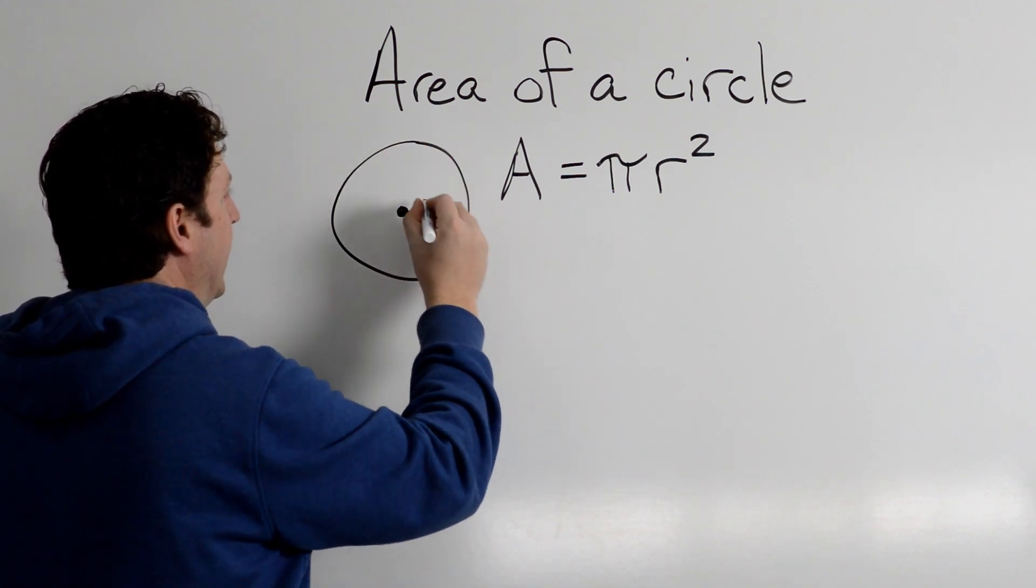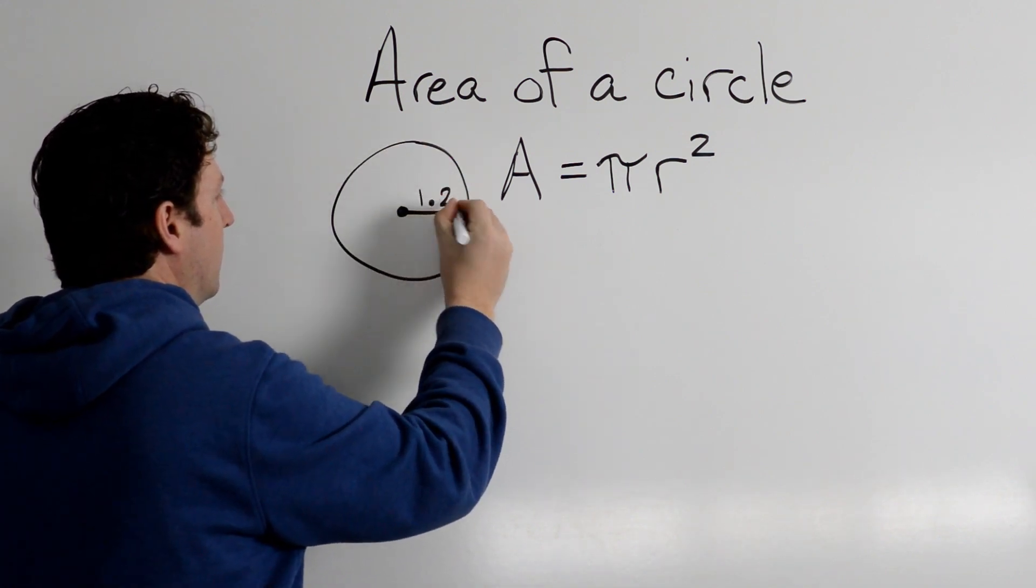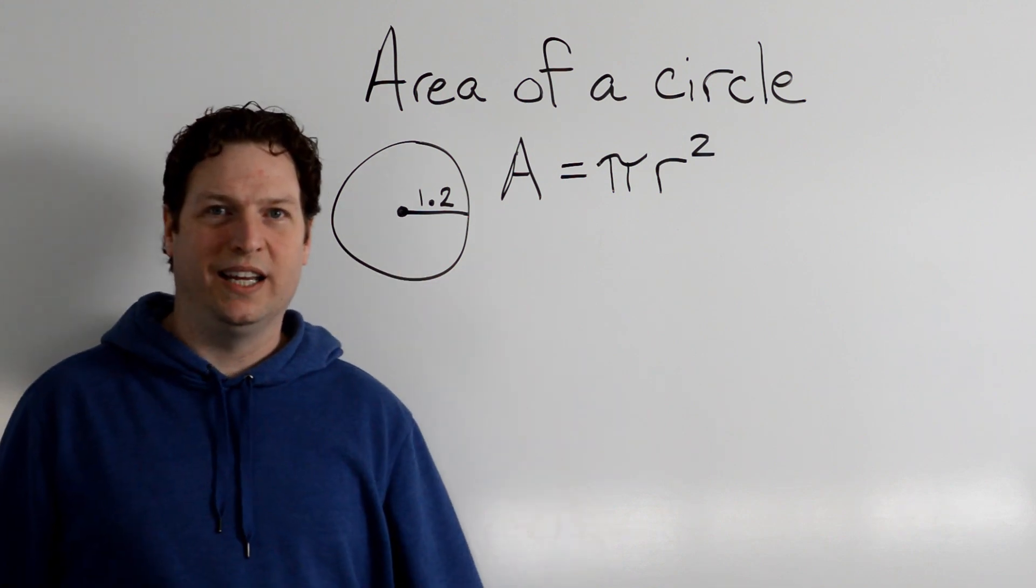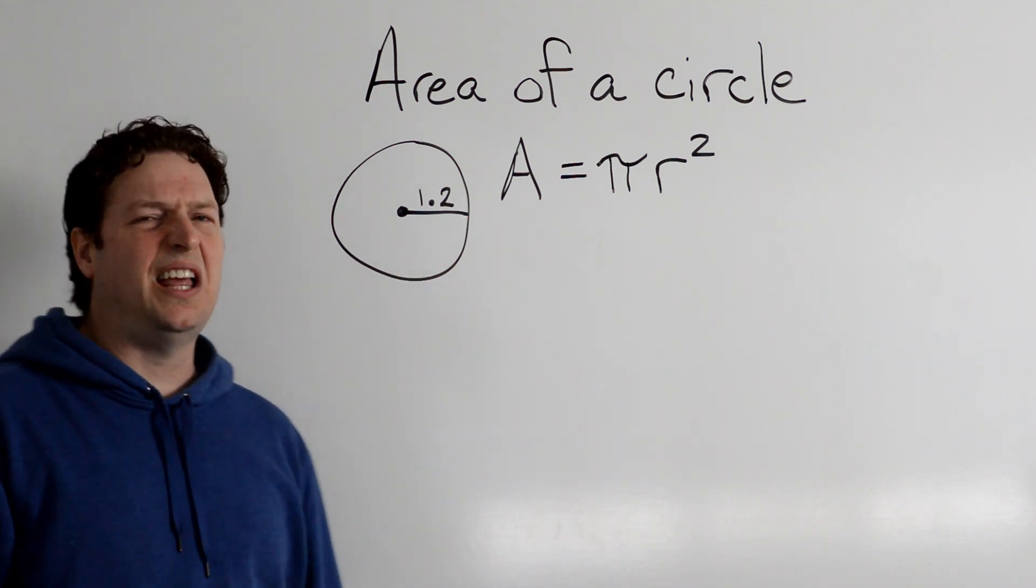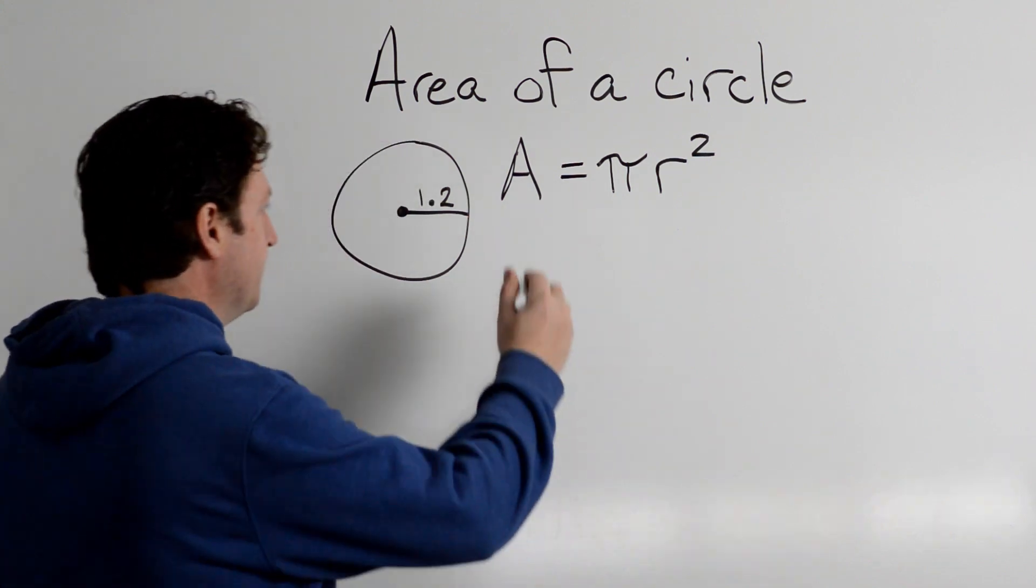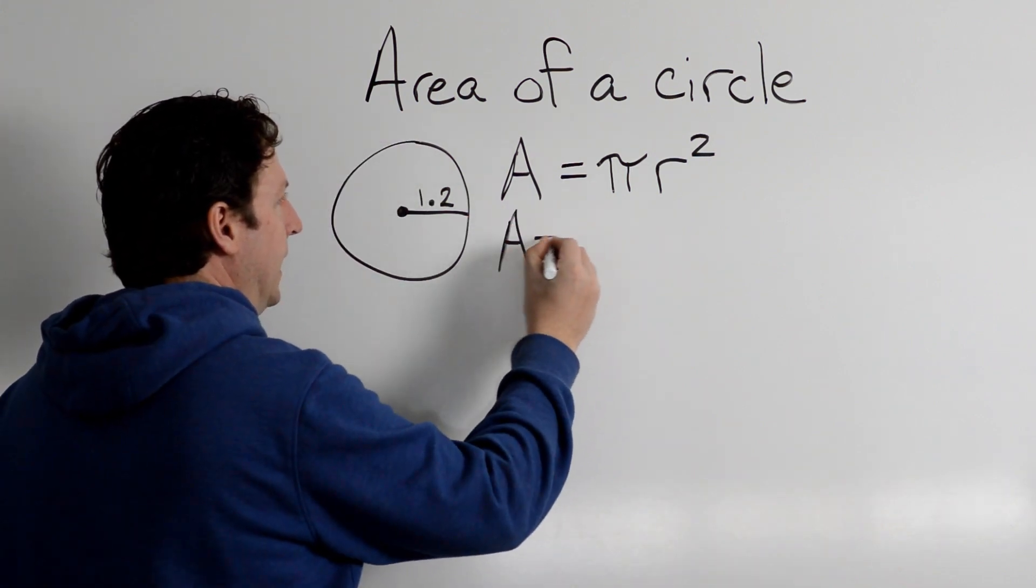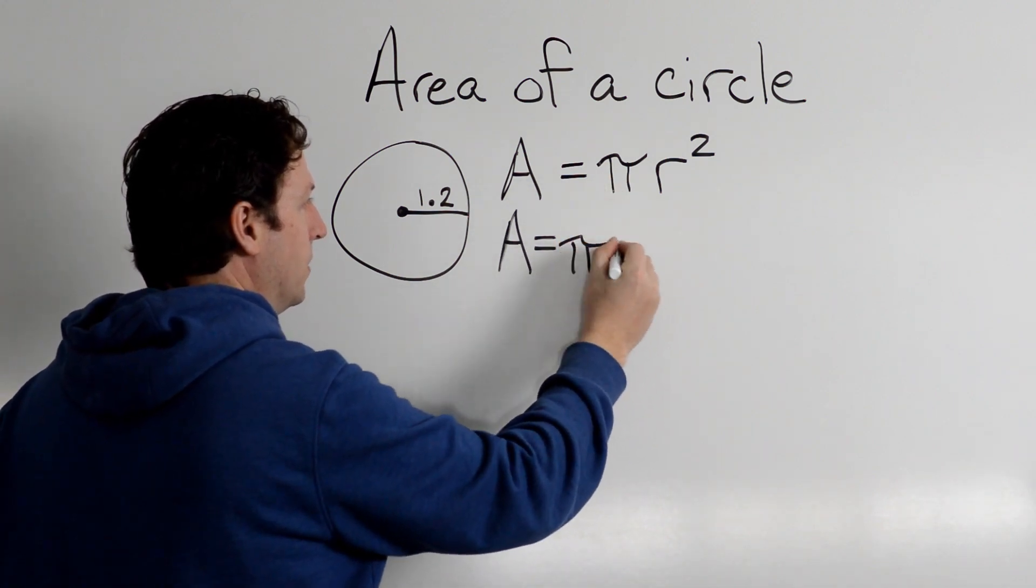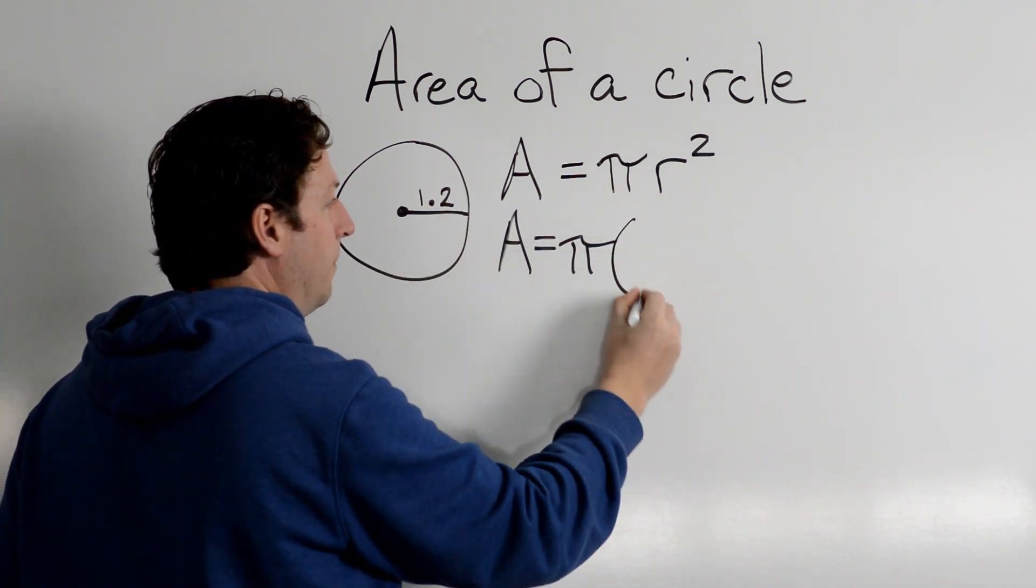So what if you have a radius of 1.2? I hate decimals. A equals, I'm going to use my pi symbol. I'm just going to plug this 1.2 and square it.